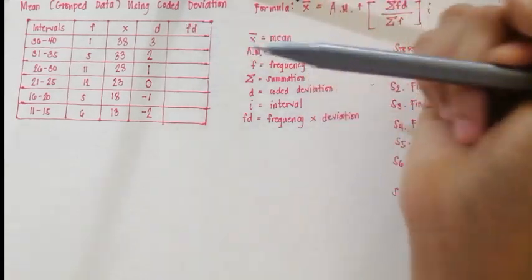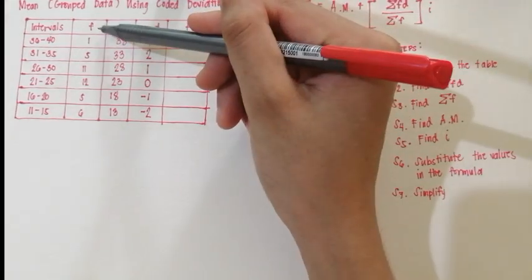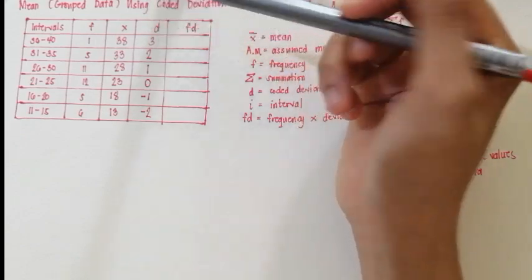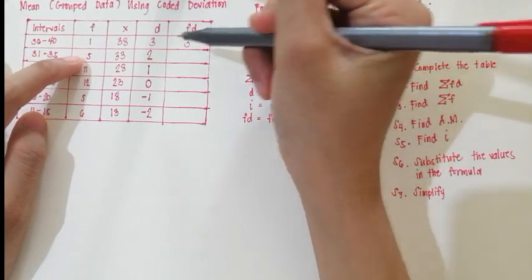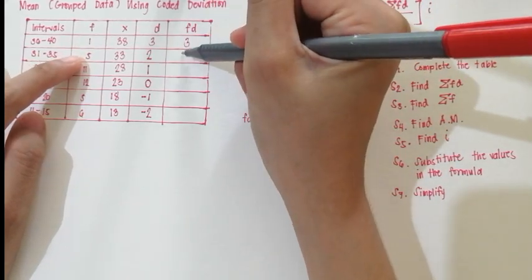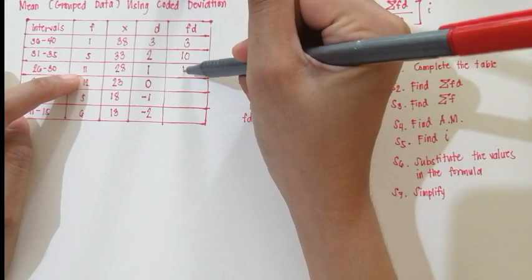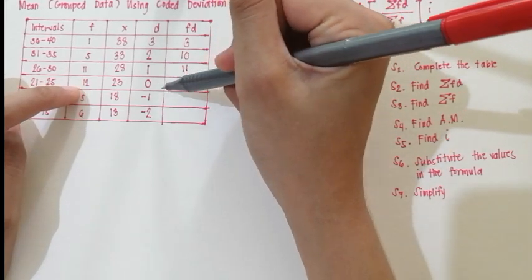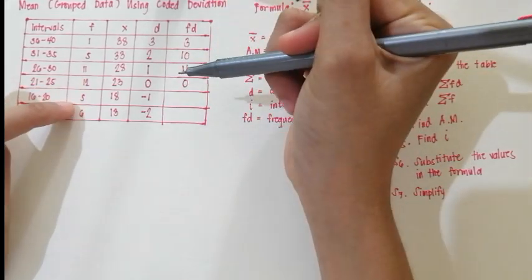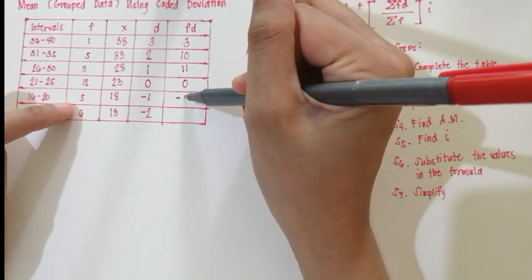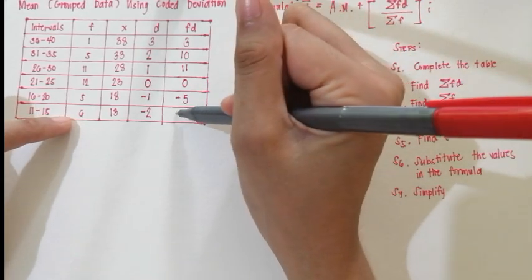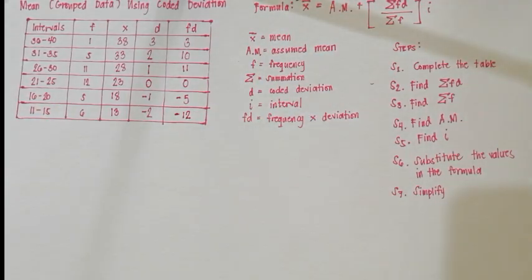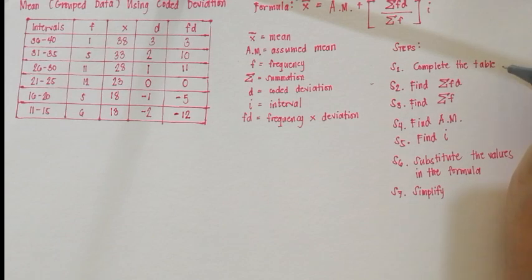Now let's proceed to FD — we're going to multiply frequency and deviation. 1 times 3 is 3. 5 times 2 is 10. 11 times 1 is 11. 12 times 0 is 0. 5 times negative 1 is negative 5. And 6 times negative 2 is negative 12. We are done now with completing the table — Step 1 is done.